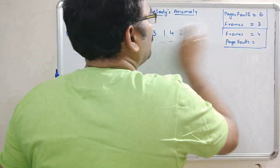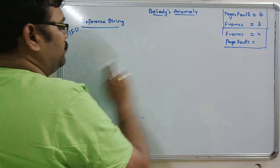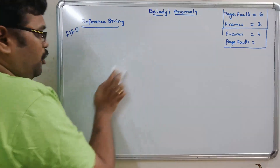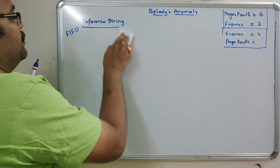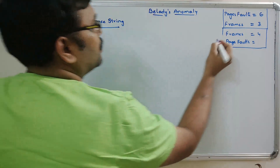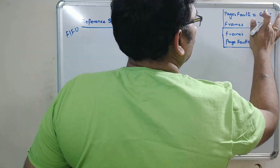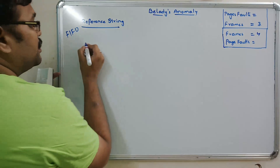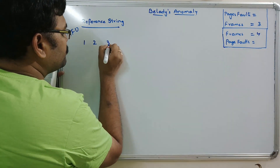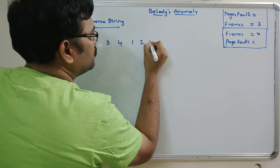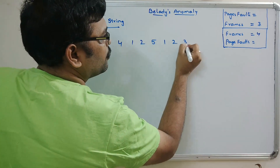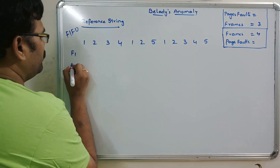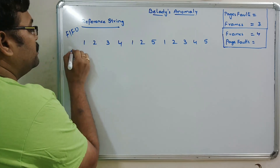We will take a new reference string and apply the FIFO algorithm, first with a smaller number of frames and then increase the frames to observe the effect. We will start with 3 frames.